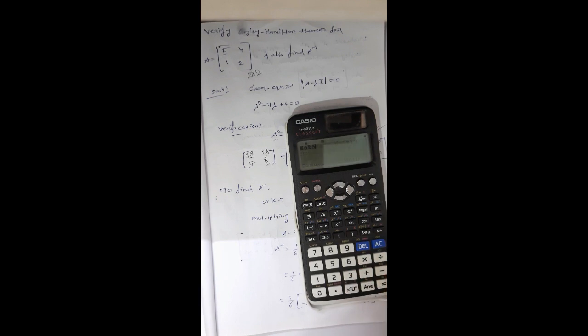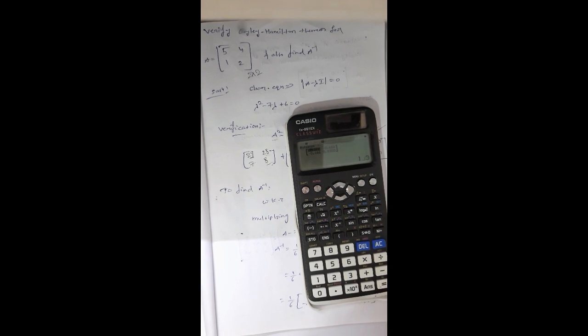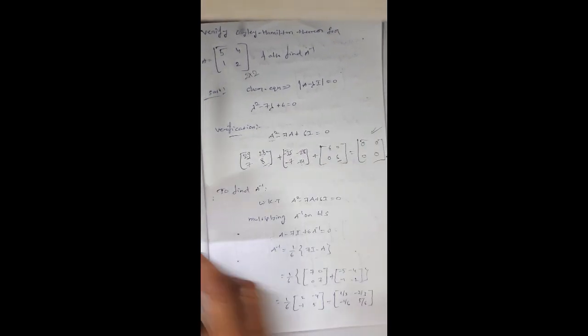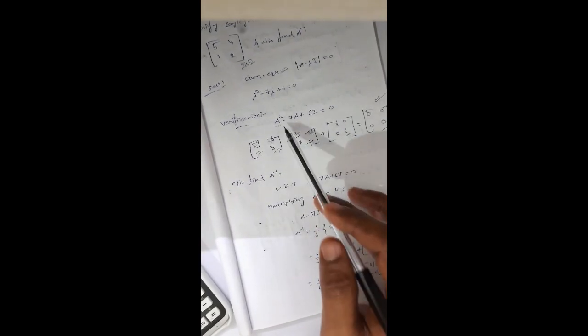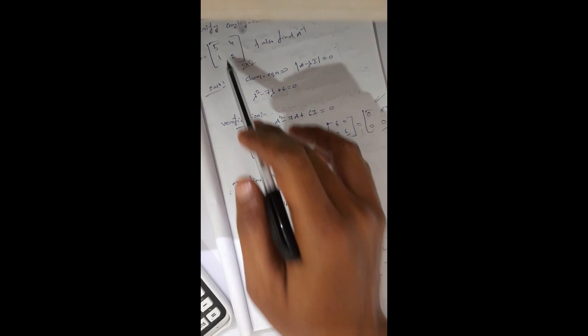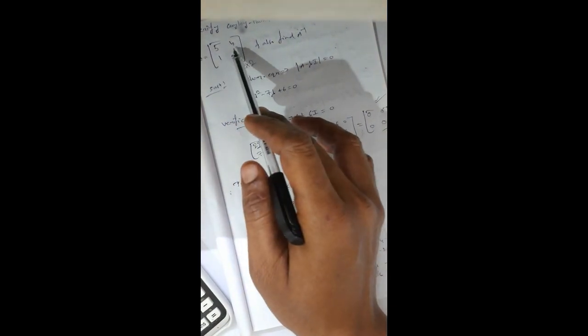To find A inverse algebraically using Cayley-Hamilton, start from A squared minus 7A plus 6I equals 0. Multiply both sides by A inverse. This gives A minus 7I plus 6A inverse equals 0, so A inverse equals (1/6)(7I minus A). Substituting: 7I is [7, 0; 0, 7] and minus A is [minus 5, minus 4; minus 1, minus 2], giving the result after simplification.